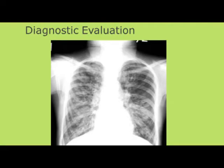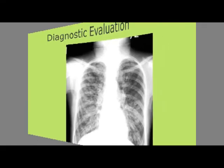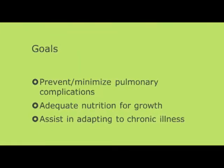The goals of therapy for cystic fibrosis are to prevent or minimize pulmonary complications, ensure adequate nutrition for growth - challenging because respiratory effort can diminish appetite - and assist the child in adapting to a chronic illness. There is no cure, so management is the focus.